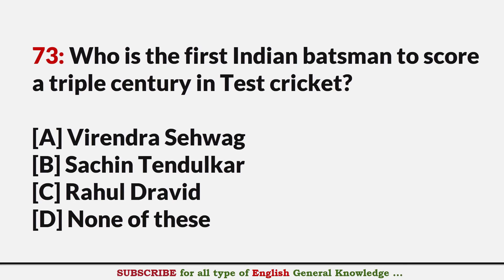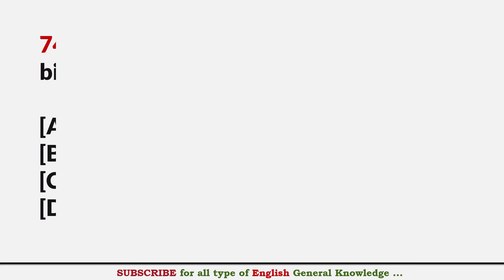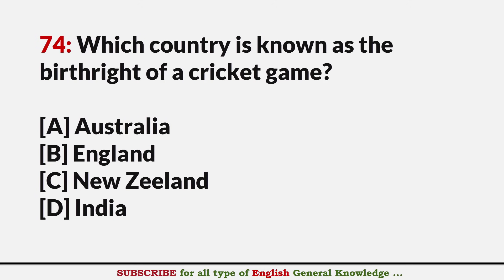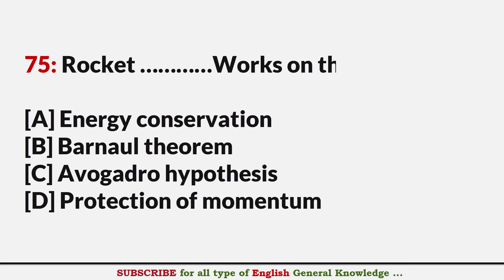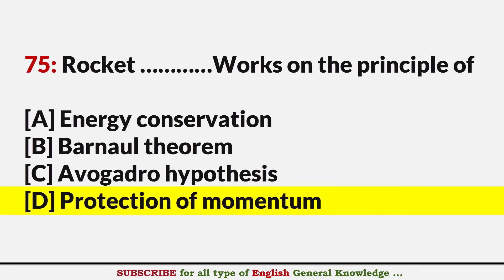Who is the first Indian batsman to score a triple century in Test cricket? Answer A: Virender Sehwag. Which country is known as the birthplace of cricket? Answer B: England. A rocket works on the principle of? Answer D: Conservation of momentum.